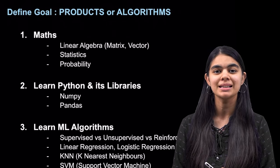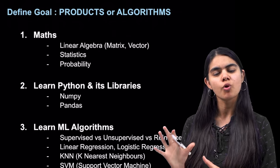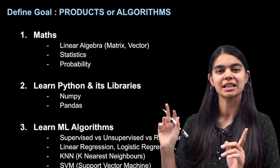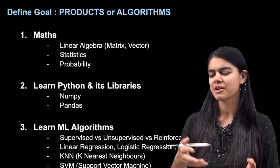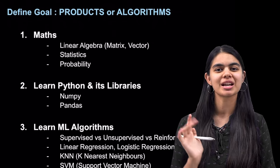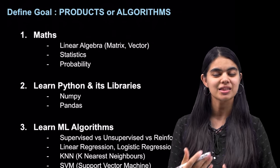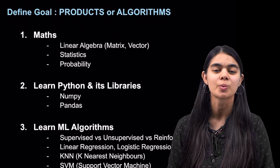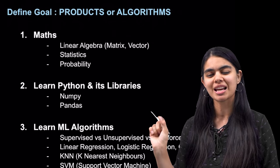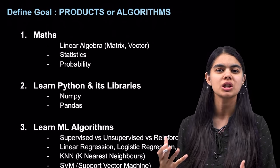Once we have our goal in mind, the first step is to learn math. This is math from a science or commerce background, which we typically learn in 11th or 12th grade. We need to cover linear algebra — including vectors and matrix topics — as well as statistics and probability. If you've already studied this, a quick revision will do. We have a playlist covering these topics. If you don't come from a math background, we have books, videos, and playlists in the resources list below where you can learn basic math within 2-3 days.